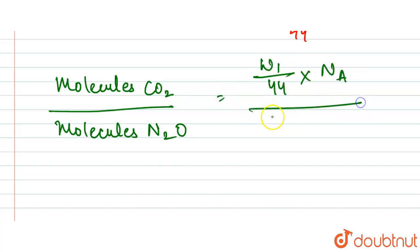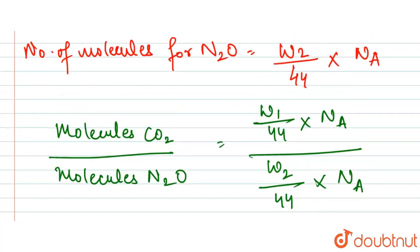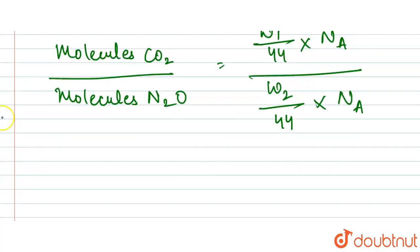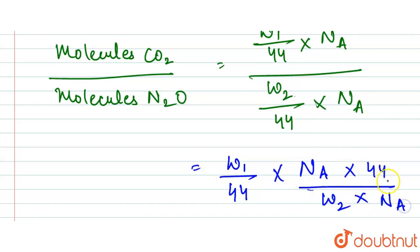Right, now w1 will be on top, 44 will be here, Avogadro's number on top, and w2 times 44 times Avogadro's number in the denominator. So now this will be cancelled - 44, Avogadro's number - this, this, this.